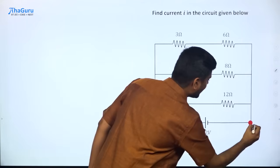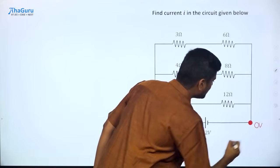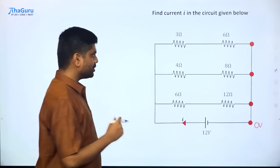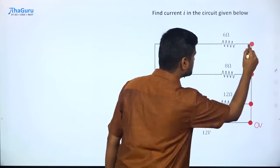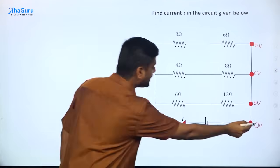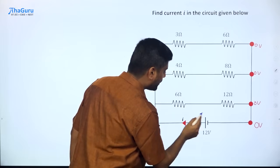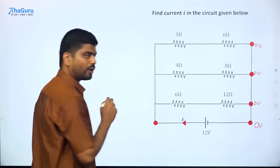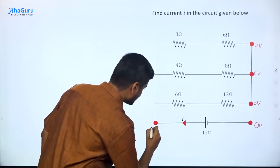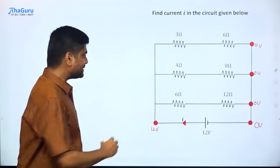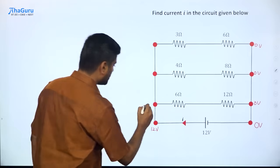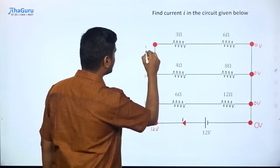Let me choose this point and write the potential here to be 0 volts. Since this is an ideal wire, all through the potentials have to be the same. So the potential at all of these points is 0, 0, and 0. Now if the potential here is 0 and this is a 12 volt battery, the potential at this point has to be 12 more, so this has to be 12 volts. Since this is also an ideal wire, all through the potentials have to be the same — 12, 12, and 12.